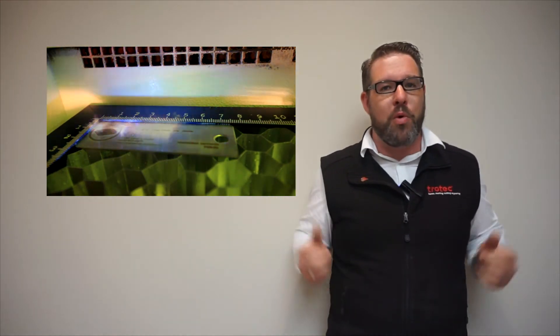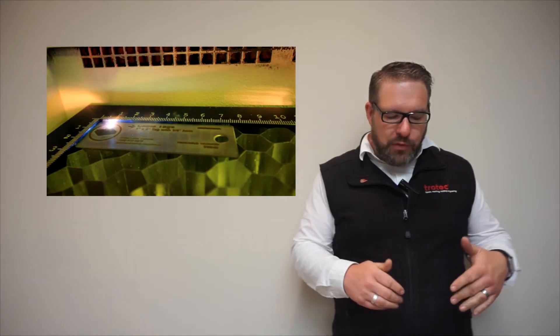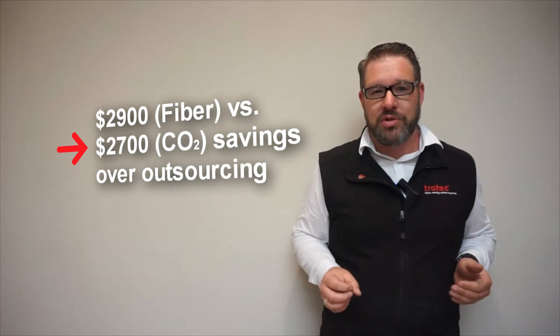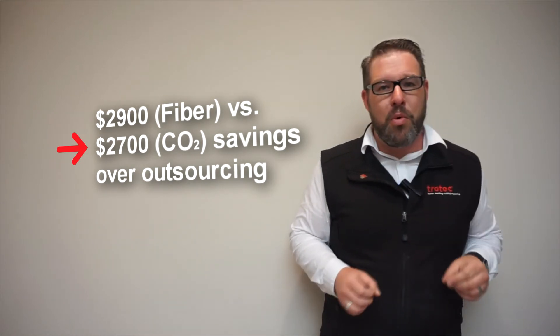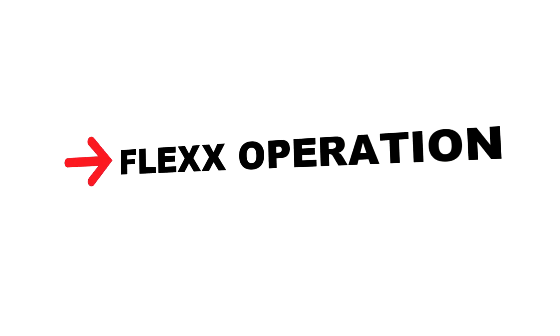The labor costs are way more than machine costs anyway because labor costs are ongoing whereas the machine eventually gets paid off. So after we calculated all of that we found out that there would be a savings of $2,900 over outsourcing, which is just a little tiny bit more than they would do from the CO2 laser. And that's because they have no ability to create the plastic tags on the fiber laser and they had to outsource. So there wasn't a huge difference, so we thought now let's see how a flex works.